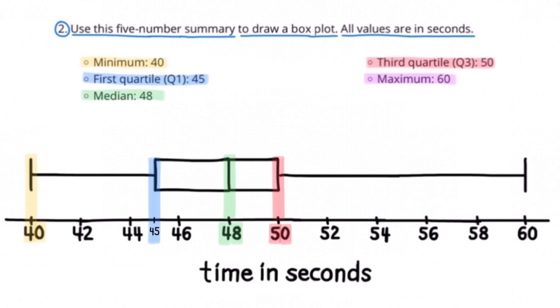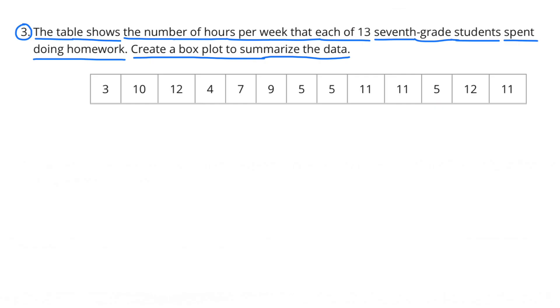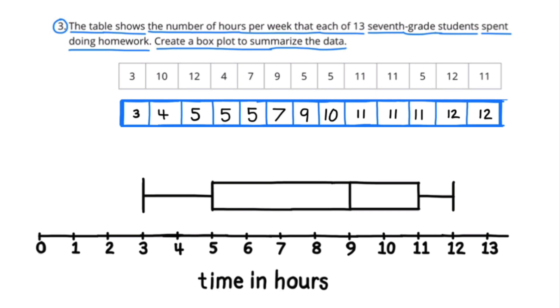Number three: The table shows the number of hours per week that each of 13 seventh-grade students spent doing homework. Create a box plot to summarize the data. The first thing that I did was order the data from smallest to greatest. Now would be a good time to press pause and give it a try. Here's a look at the final product. This box plot summarizes the data. Press pause to compare it with yours.